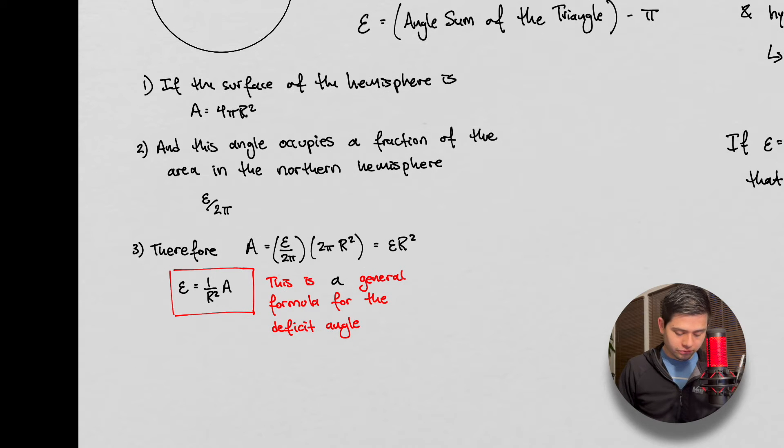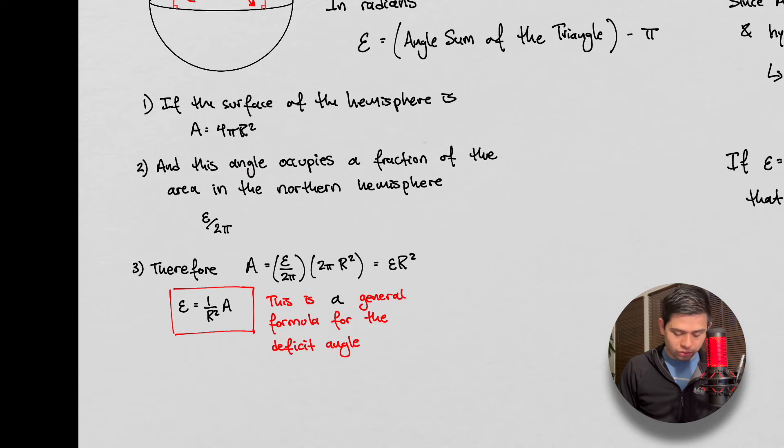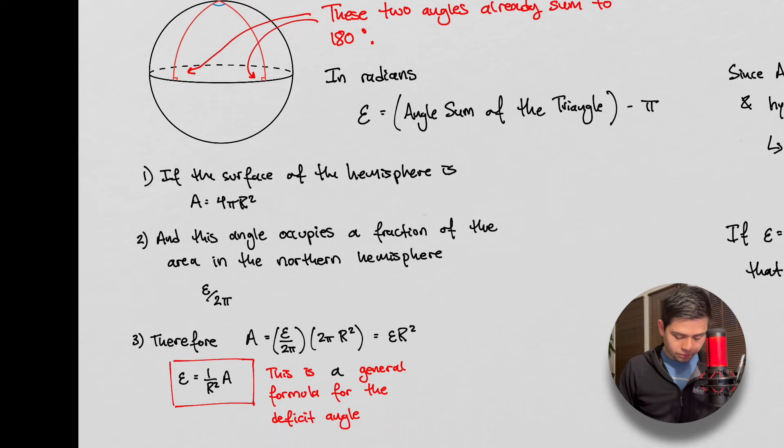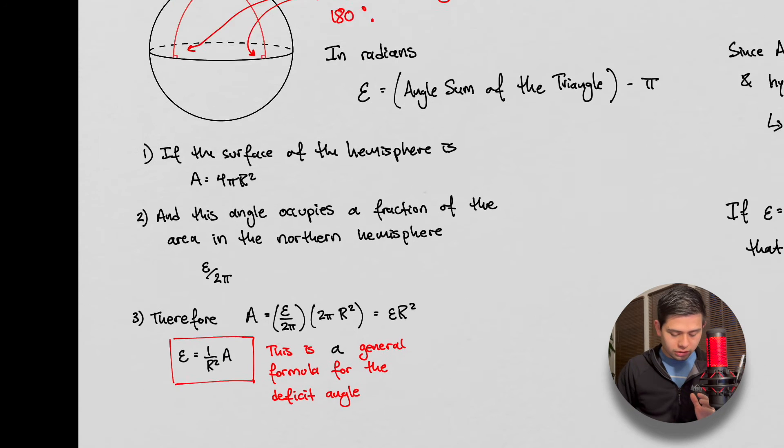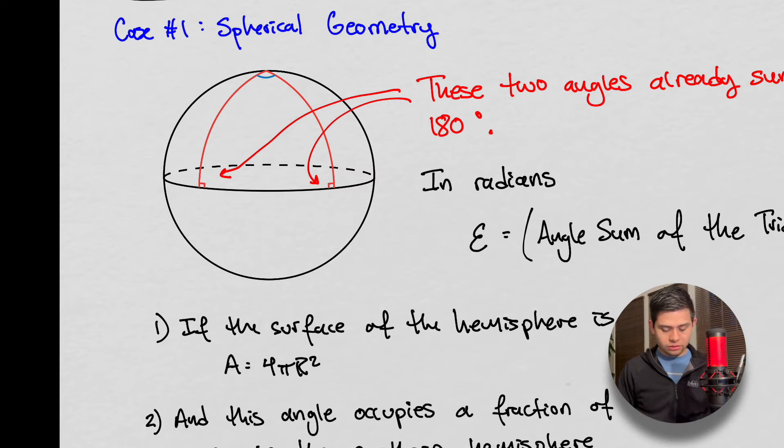With this, if the sphere of the hemisphere is given by this simple equation, which you've probably seen in a general geometry class, and the angle occupies a fraction of the area in that northern hemisphere, here's that northern hemisphere again, we can say that the area therefore is 2πr, because we're just dealing with the northern hemisphere, times this factor here. And whatever epsilon is, if it's small, that fraction is going to be small, and that sort corresponds to a smaller angle up here. So we can think of the angle as closing in on itself.